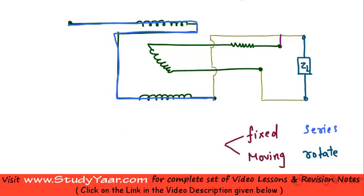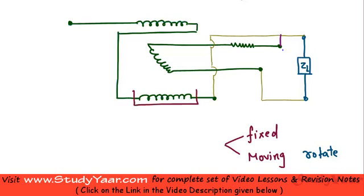Going further through the circuit, you can trace the path through to the load terminal — confirming that the fixed coils are themselves in series and connected in series with the load. So your fixed coil is connected in series.